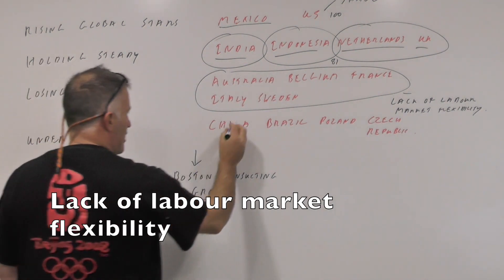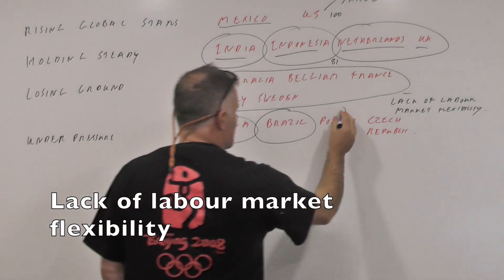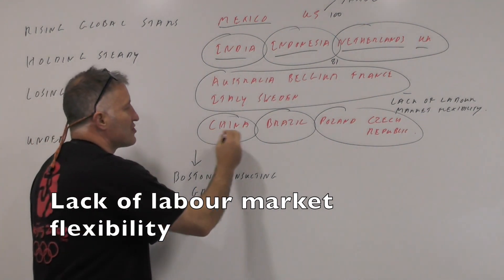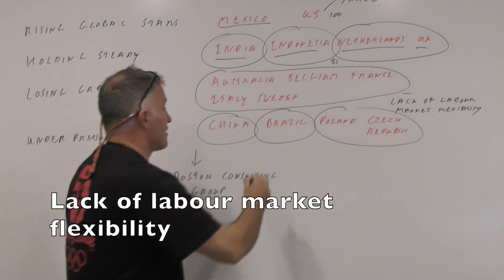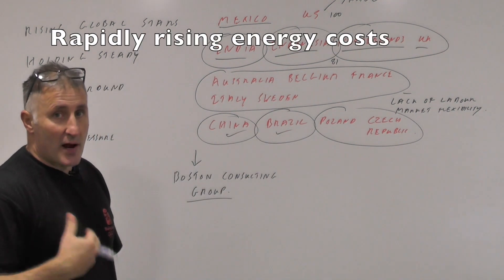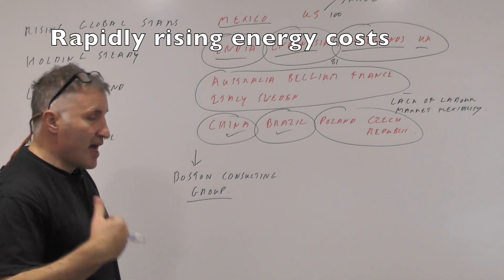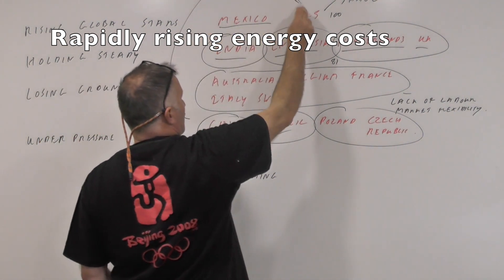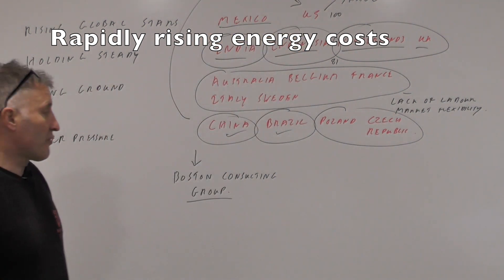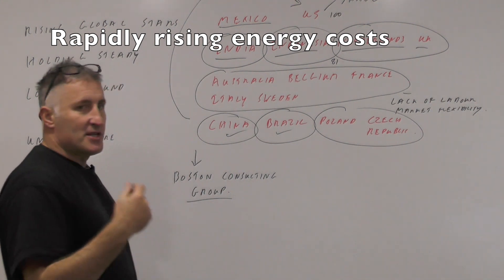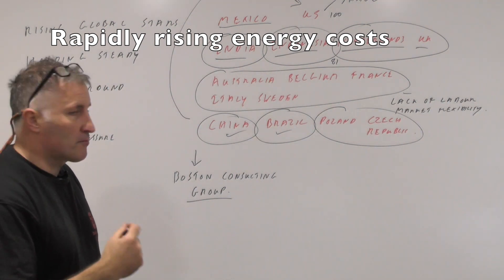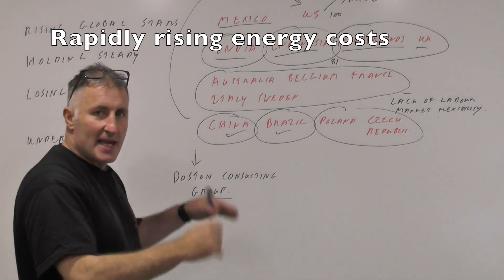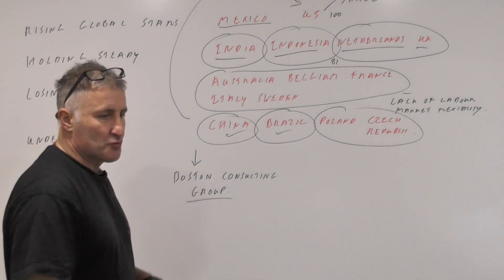China, Brazil, and Eastern Europe are doing well but under pressure because wages are rising rapidly, particularly in Brazil and China. Energy costs are also becoming higher. America now has shale gas, and the UK may also get shale gas, which would lower energy costs and provide another competitive advantage. Overall, according to the Boston Consulting Group, the UK is doing okay.